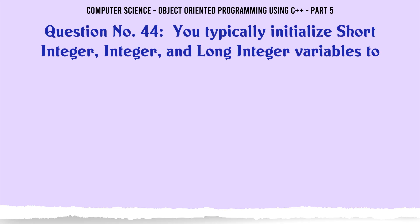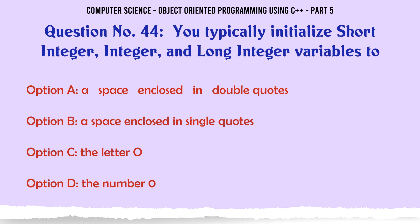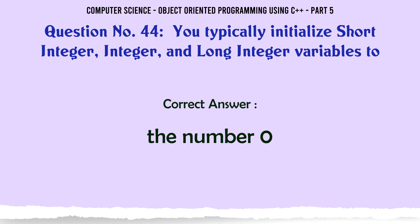You typically initialize short integer, integer, and long integer variables to. A. A space enclosed in double quotes. B. A space enclosed in single quotes. C. The letter O. D. The number 0. The correct answer is: The number 0.